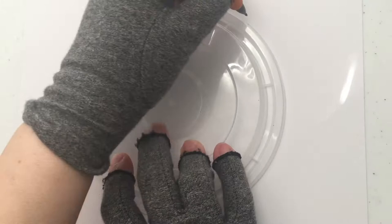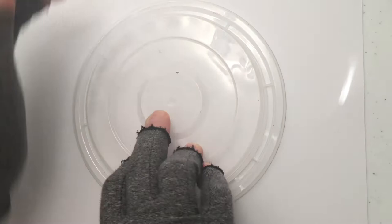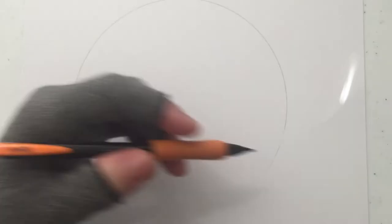Let's get started. Here I'm drawing a circle with the top of a plastic container because, well, I have to admit the circle wouldn't come out too evenly if I did it freehand.